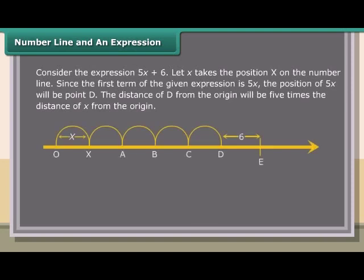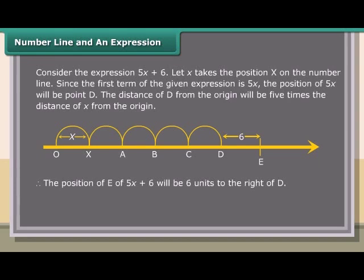Consider the expression 5x plus 6. Let x take a position on the number line. Since the first term of the expression is 5x, the position of 5x will be point D. The distance of D from the origin will be 5 times the distance of x from the origin. Therefore, the position E of 5x plus 6 will be 6 units to the right of D.